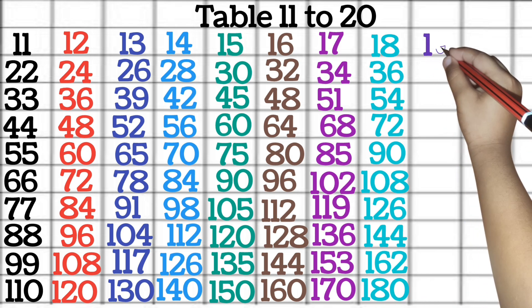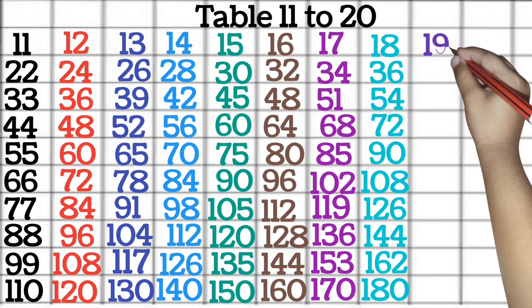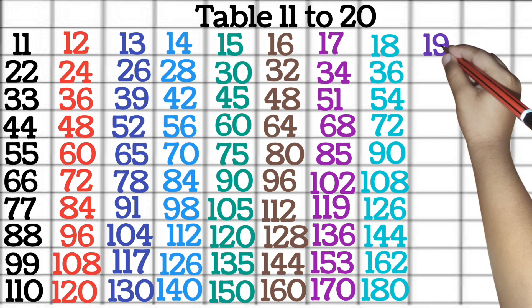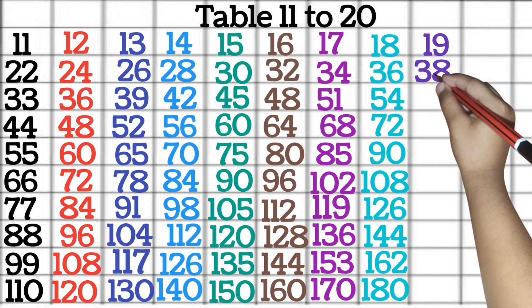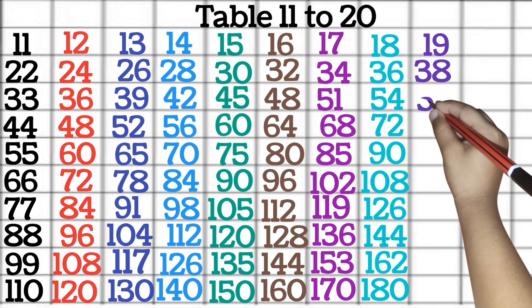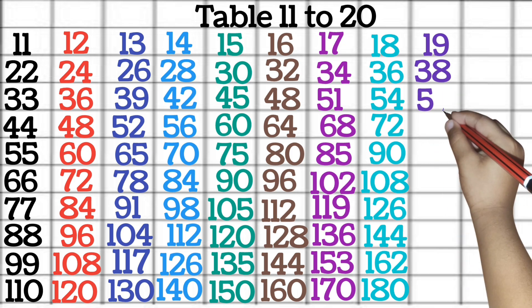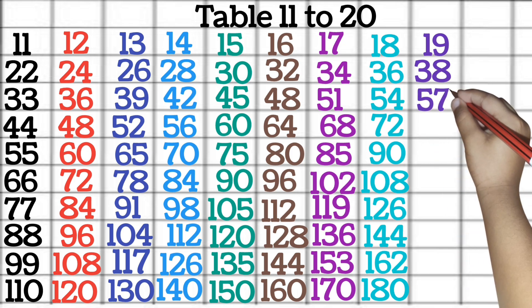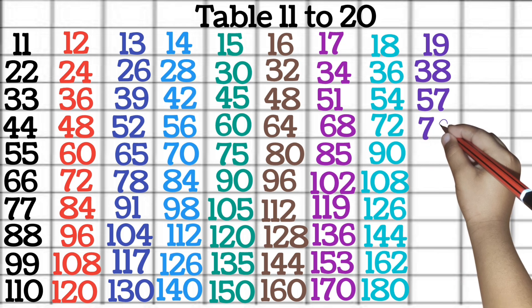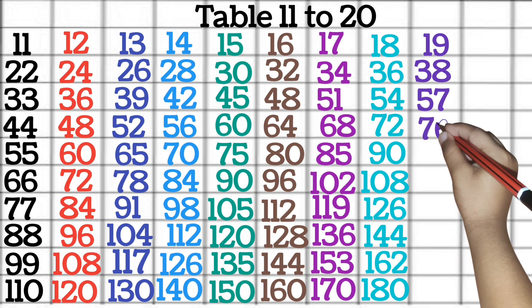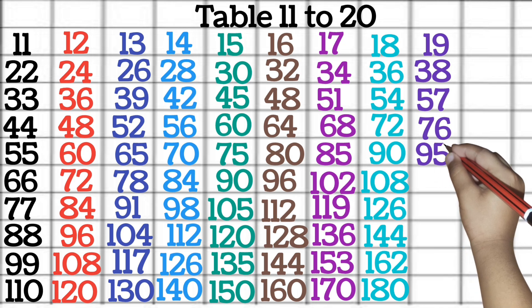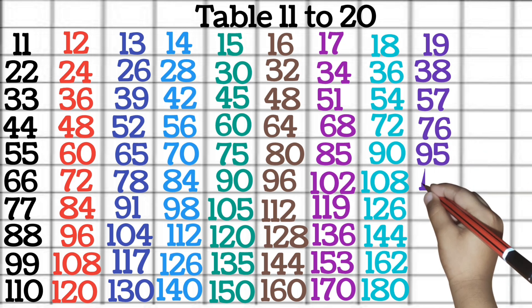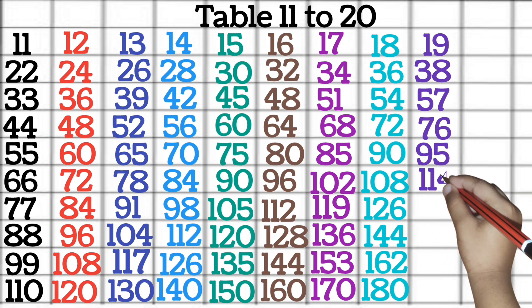Table of 19. 19 1 jah 19. 19 2 jah 38. 19 3 jah 57. 19 4 jah 76. 19 5 jah 95.